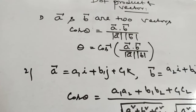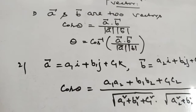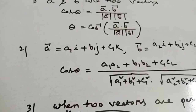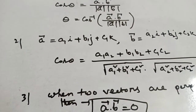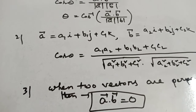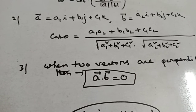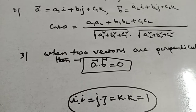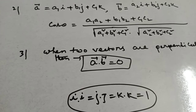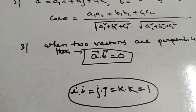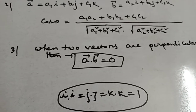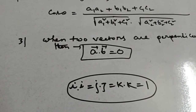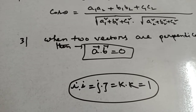When finding the angle between two vectors, you can apply the formula: cos theta equals a vector dot b vector, divided by mod of a into mod of b. When two vectors are given as a vector equal to a1i plus b1j plus c1k and b vector equal to a2i plus b2j plus c2k, then cos theta equals a1·a2 plus b1·b2 plus c1·c2, divided by root over a1 square plus b1 square plus c1 square, into a2 square plus b2 square plus c2 square. When two vectors are perpendicular to each other, apply the formula a dot b equals 0. And also, i dot i equals j dot j equals k dot k equals 1.